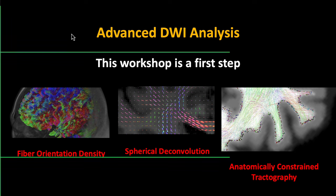This workshop is a first step. Later on next semester we'll talk about more advanced topics such as fiber orientation density, something called spherical deconvolution — which gets around the so-called crossing fibers problem — as well as anatomically constrained tractography. For example, starting from a seed region, we consider what's the most likely path of a white matter fiber. We know that white matter fibers don't terminate in the ventricles and usually don't make a 90-degree turn, so we introduce constraints from the nearby anatomy to find a biologically plausible path.